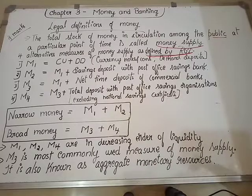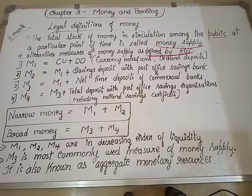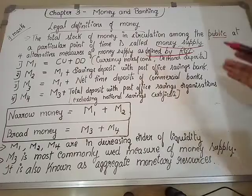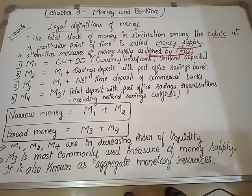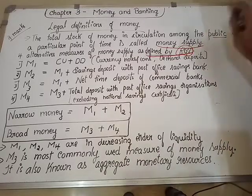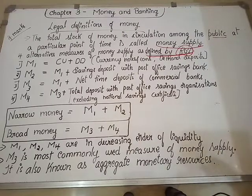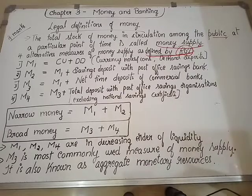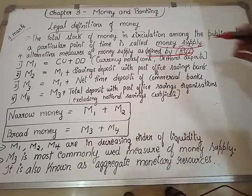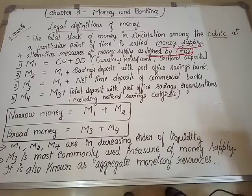I have also told you about the money that we keep in the post office. RBI has classified money into four categories — four alternative measures of money. So, RBI has given four definitions for money supply: M1, M2, M3, and M4.